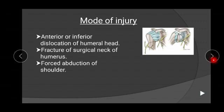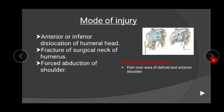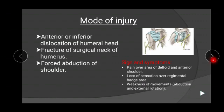Let's see what all signs and symptoms will be there. There will be pain over the area of deltoid and loss of sensation over the inferior portion of deltoid, which is known as the regimental badge area. There will be weakness of movement, mainly abduction and external rotation, and the rounded appearance of shoulder will be lost due to atrophy of deltoid muscle and the shoulder becomes flattened.